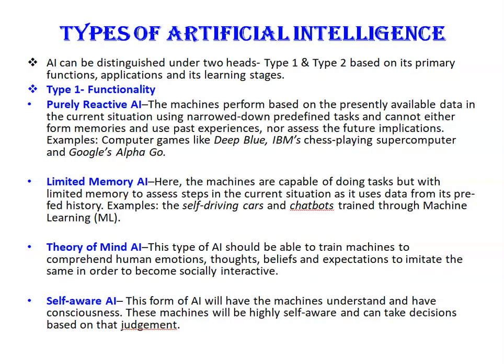Artificial intelligence can be distinguished under two headings: Type 1 and Type 2, based on its primary functions, applications, and learning stages. Type 1, on the basis of functions: Number one is purely reactive artificial intelligence — the most fundamental form, where machines perform based on presently available data using narrowed-down predefined tasks and cannot form memories, use past experiences, or assess future implications. Examples include computer games like Deep Blue, IBM's chess-playing supercomputer, and Google's AlphaGo.